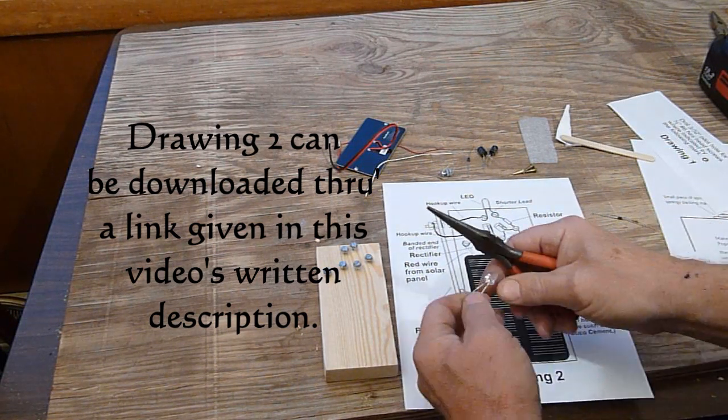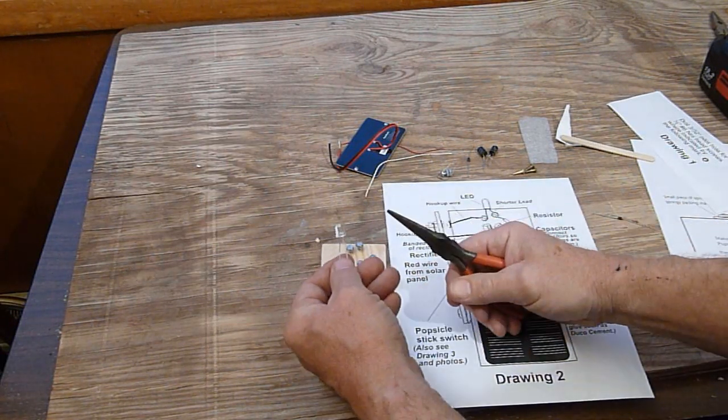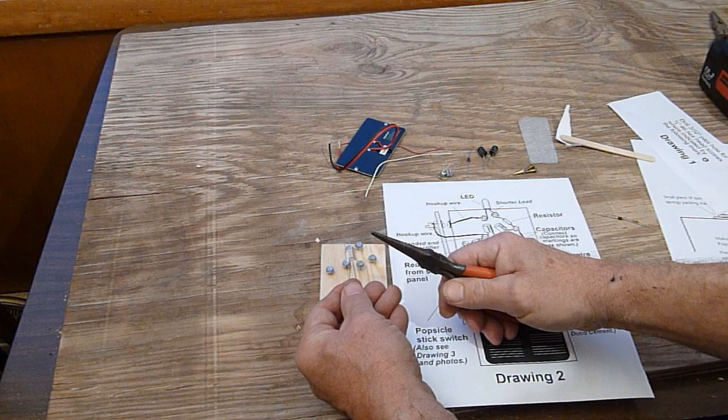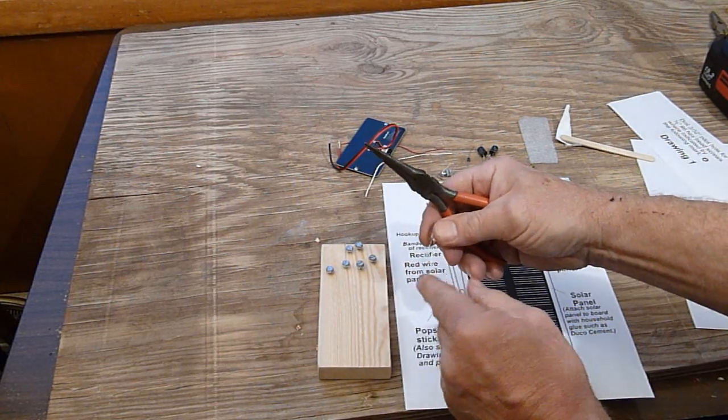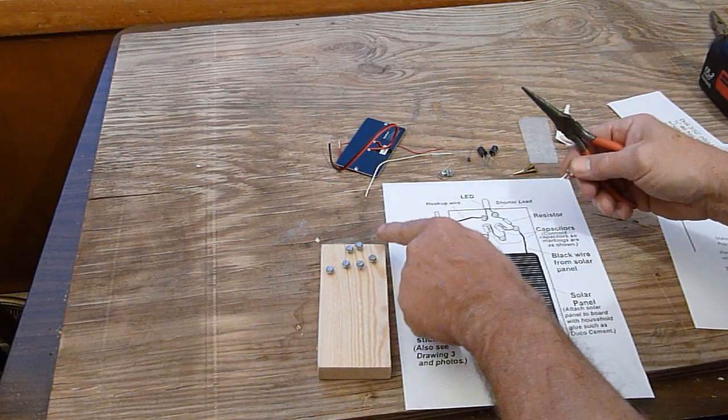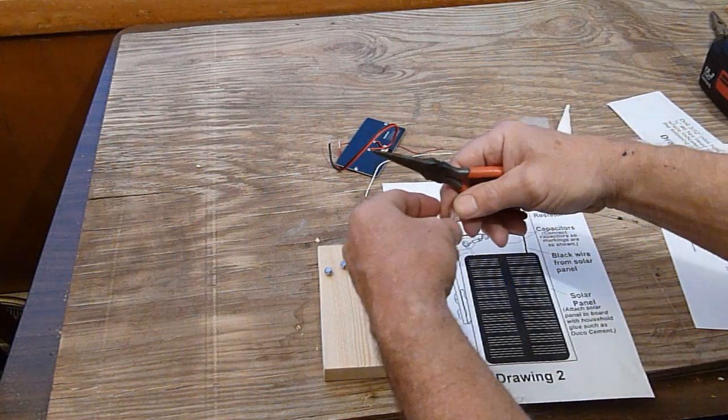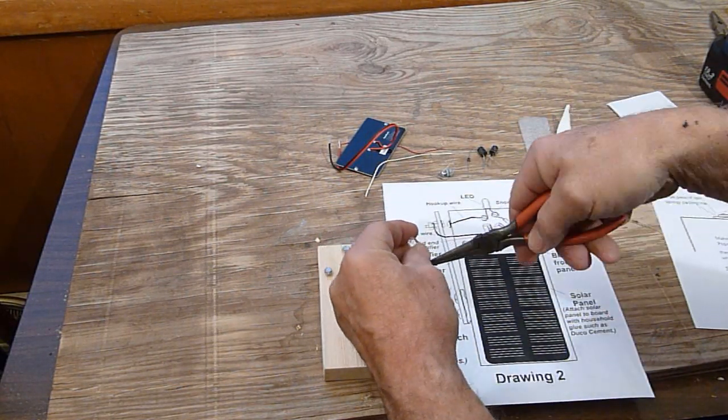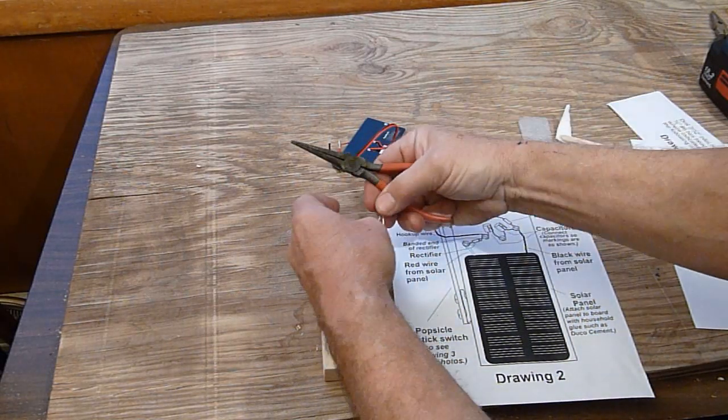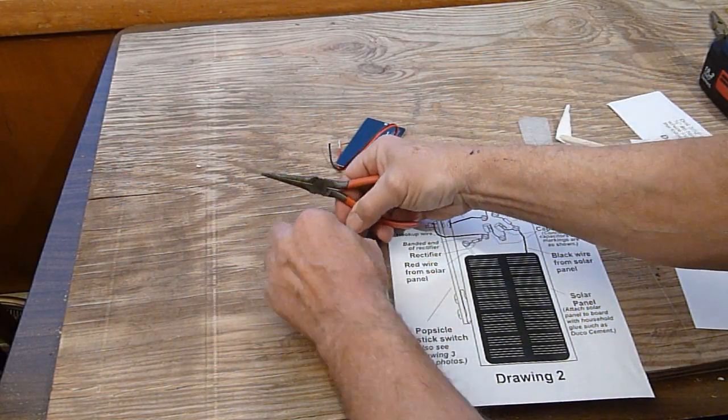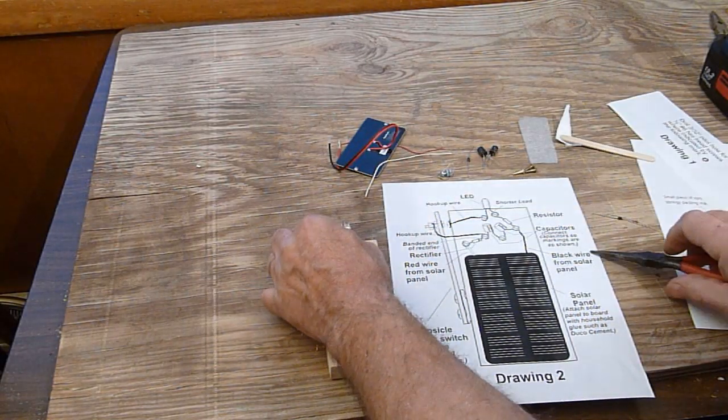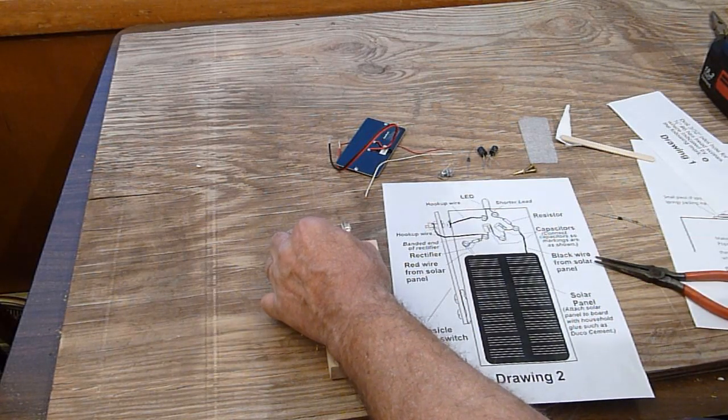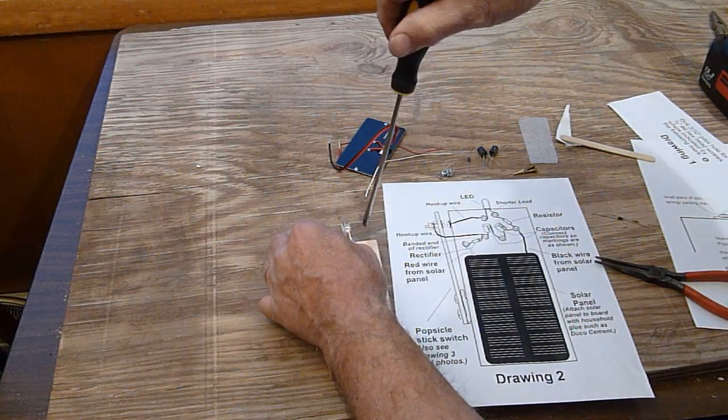We will follow drawing two here. First off, we are putting the LED. Now we want to make sure we use the short lead of the LED on this screw. Just bend it a bit like this and put it around the lead. And the other one, then we just take a screwdriver and finish tightening it.